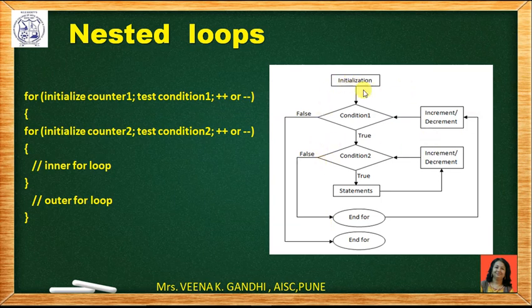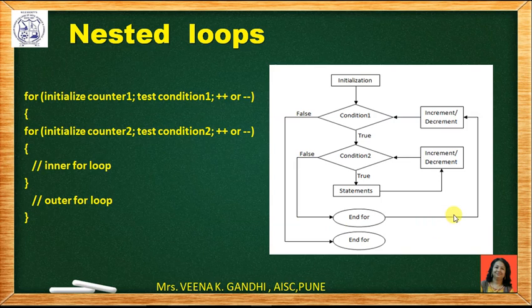The same process is expressed in the flowchart: if condition one is true, check condition two of the inner loop. If true, the inner statement executes, then update the inner counter. If condition two fails, it updates the counter of the outer loop.